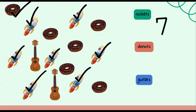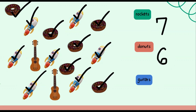Now we're going to count our doughnuts. Count with me: one, two, three, four, five, six. There are a total of six doughnuts. Now let's count the guitars. Count with me: one, two. Good job! There are two guitars in this set. We have seven rockets, six doughnuts, and two guitars.